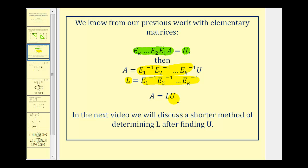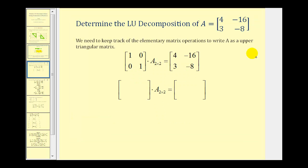A is going to be equal to L times U, where L is our lower triangular matrix and U is our upper triangular matrix. In the next video, we will discuss a shorter method for determining L and U without using elementary matrices. But let's take a look at two examples in this video using elementary matrices, starting with a basic two-by-two matrix.